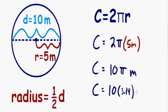We still can't forget about our units, which is meters. Finally, the only thing left is just multiplying. If you plug in 10 times 3.14 into your calculator we get 31.4 meters. So the circumference is approximately 31.4 meters.